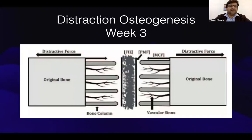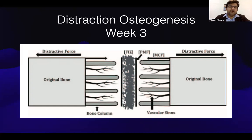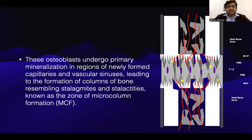In week 3 of distraction osteogenesis, we can see a fibrous interzone surrounded by a primary mineralization front, with two areas of micro-column formation. The osteoblasts found in the primary mineralization front undergo primary mineralization in regions of newly formed capillaries and vascular sinuses, leading to the formation of columns of bone resembling stalagmites and stalactites — known as the zone of micro-column formation.